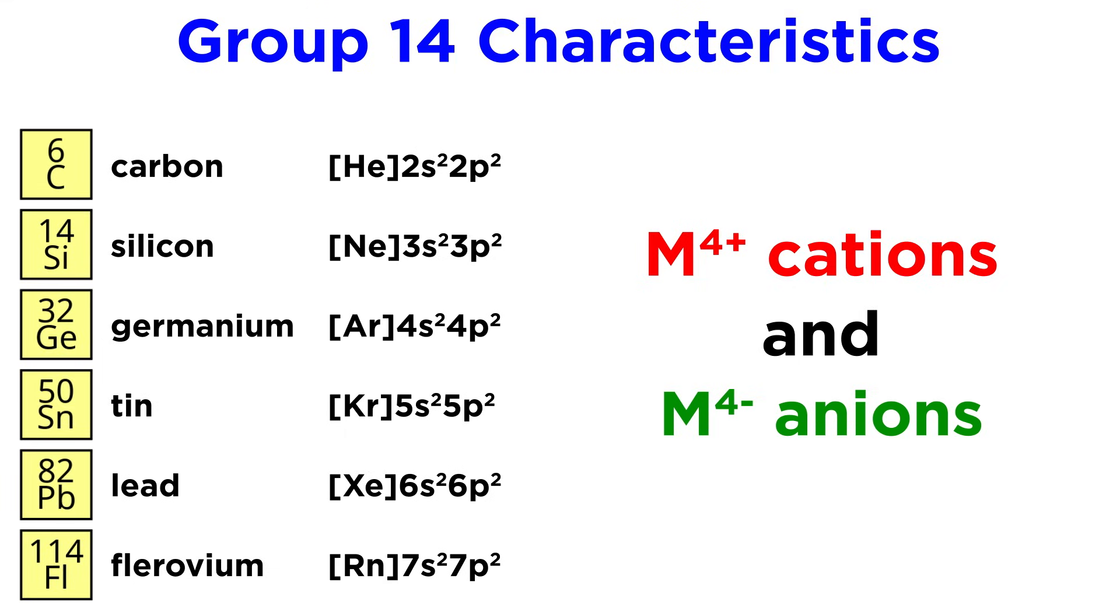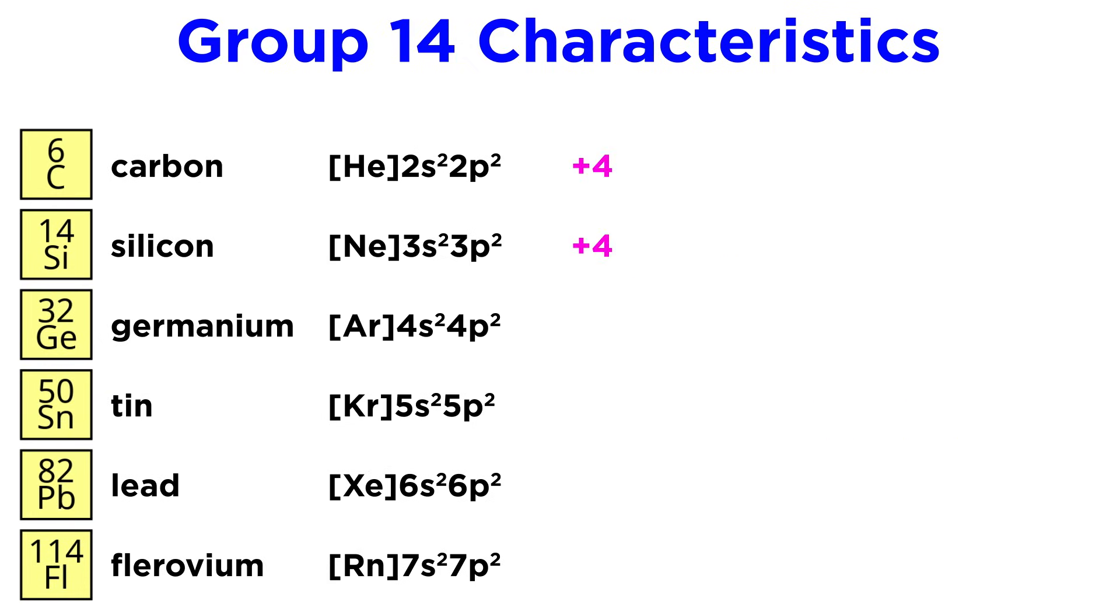They are quite interesting in that both 4 plus and 4 minus ions are possible, depending on what they are interacting with. In terms of oxidation states, plus 4 is all that carbon and silicon will exhibit, while germanium, tin, and lead can exhibit both plus 4 and plus 2, with plus 4 being more common.